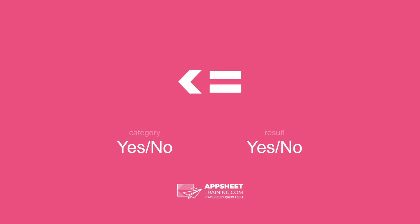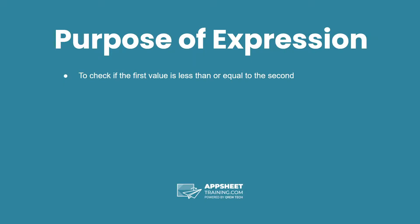The less than or equal to expression is in the category yes or no, and has a result of yes or no. The purpose of this expression is to check if the first value is less than or equal to the second.